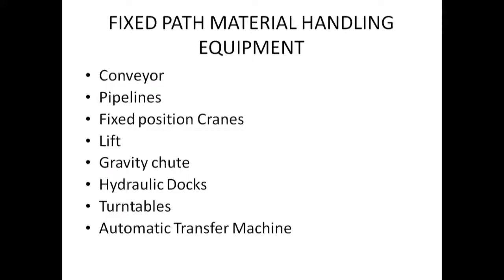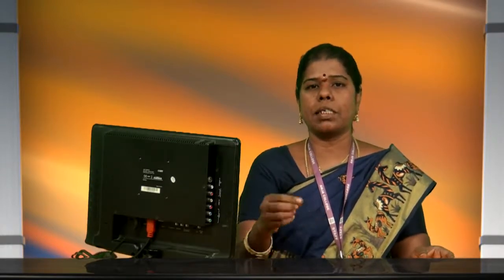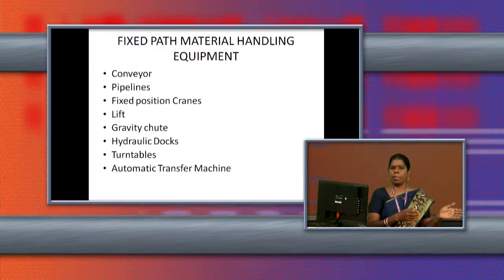The next fixed path equipment is pipelines. Pipelines are the best example for moving liquid items. It is a permanent fixed path material handling equipment, but liquid items such as water, oil, petrol, and diesel can be moved from one place to another with the help of pipelines.